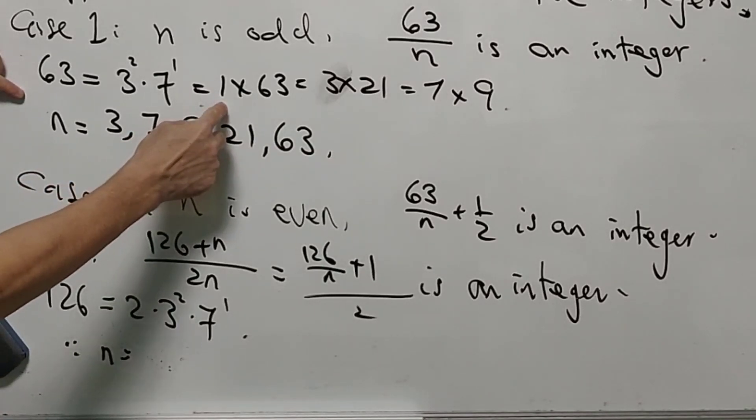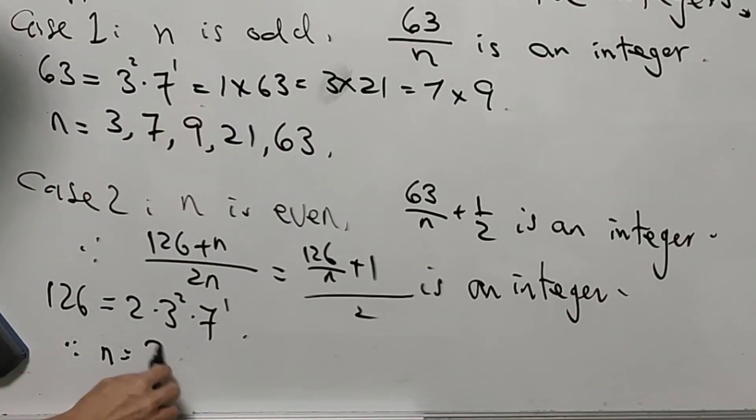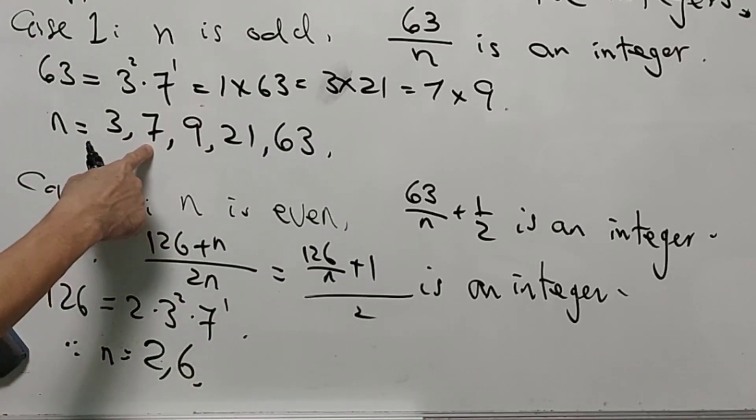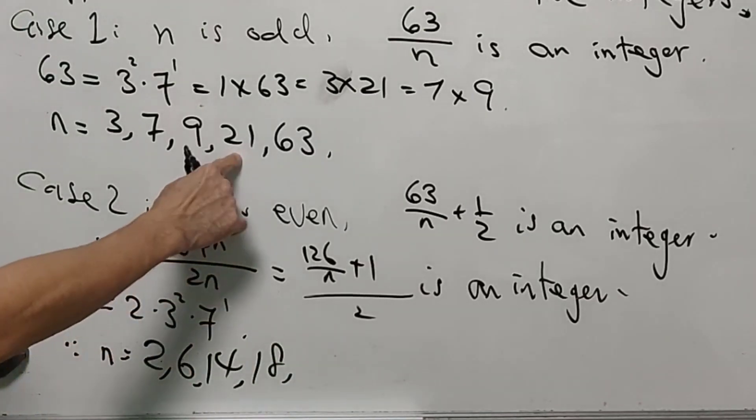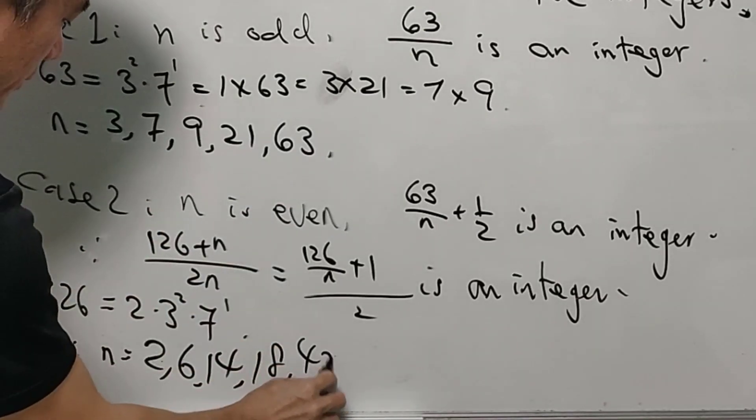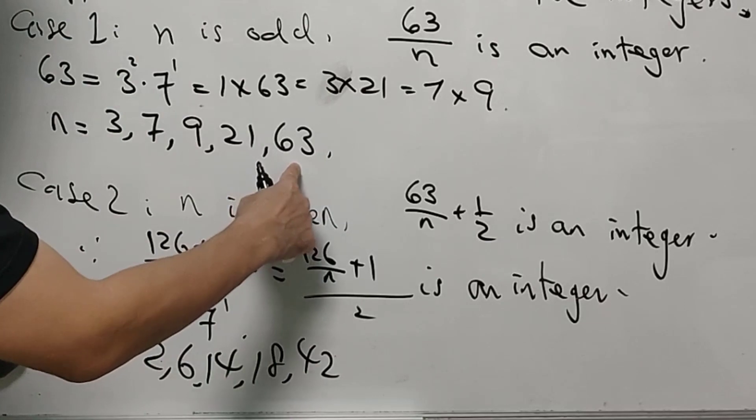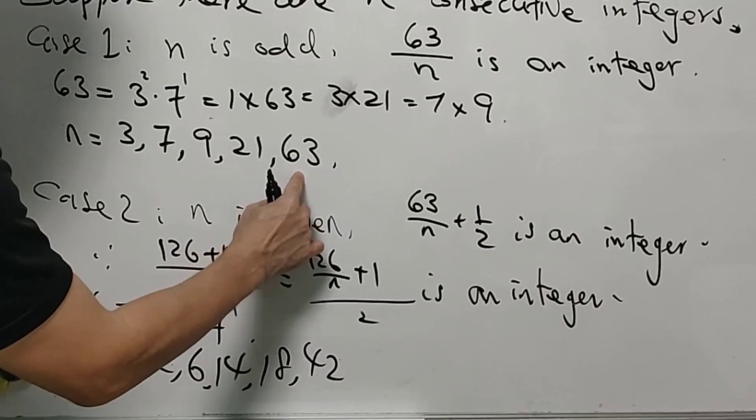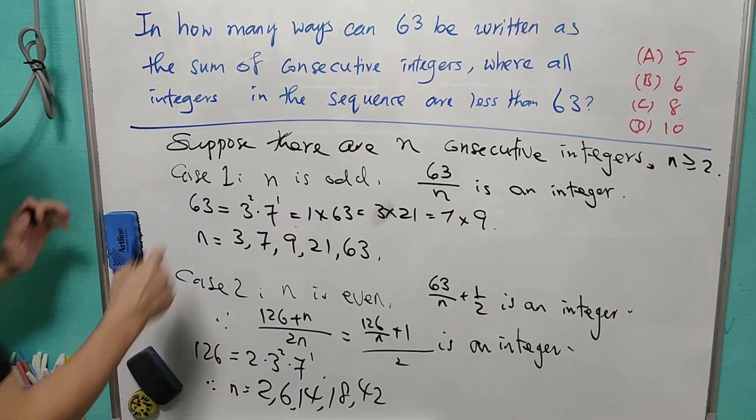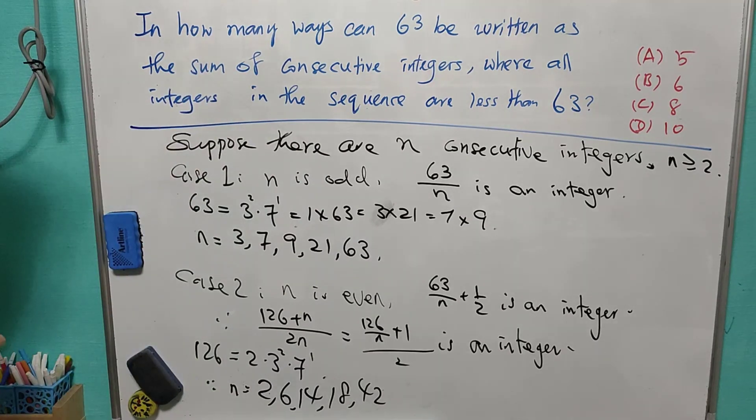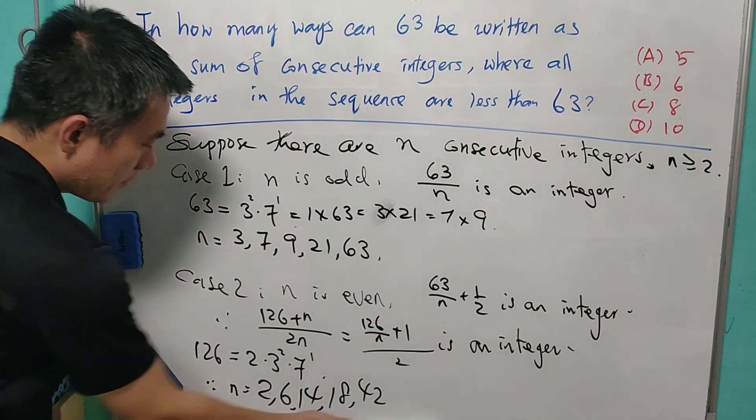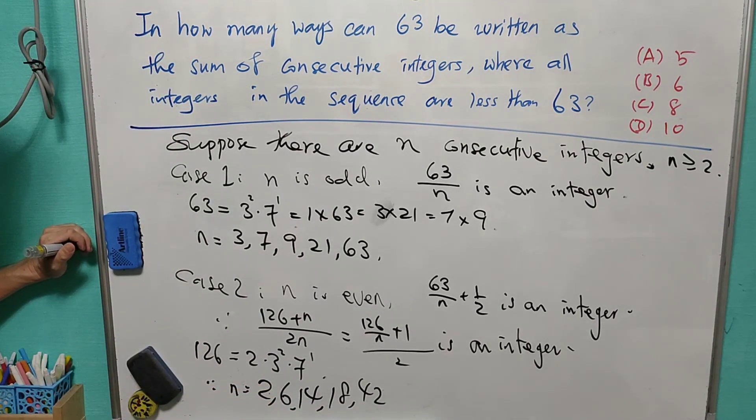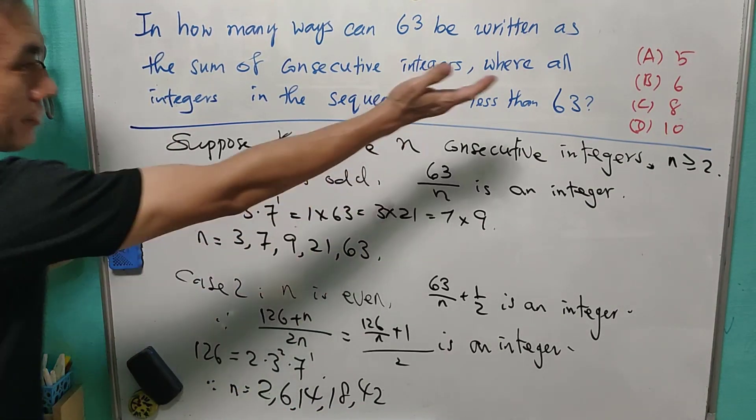n will equal to 1 times 2, that is 2; 3 times 2, that is 6; 7 times 2, that is 14; 9 times 2, that is 18; 21 times 2, that is 42. But it cannot be equal to 63 times 2. Otherwise, one of the integer will be equal to 63. So in case 2, we have another 5 possible value of n. So overall, we have 10 of them.